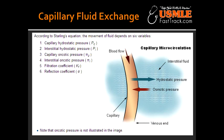What is the filtration constant, also known as KF? The filtration constant is the capillary permeability, which is a constant. What is the equation for the net fluid flow, also known as JV? The net fluid flow is the filtration constant times the P net, which is the net filtration pressure.